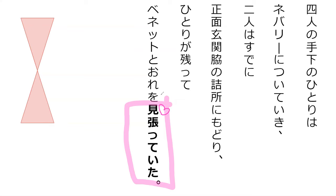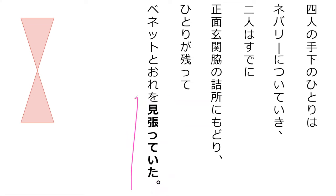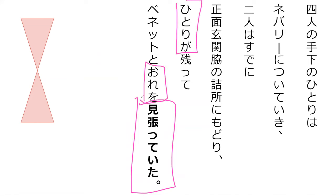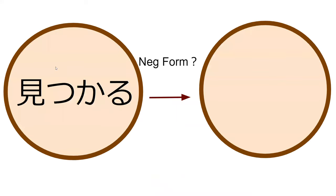This verb comes from haru, meaning to pull or stick — it shows up in hipparu. The ha from haru means to stick or attack. Mihatte ita basically means to keep an eye on something in a guarding way. So mihatte ita means 'was guarding.' Do you know what the negative form of mitsukaru is?